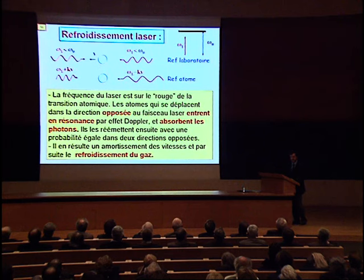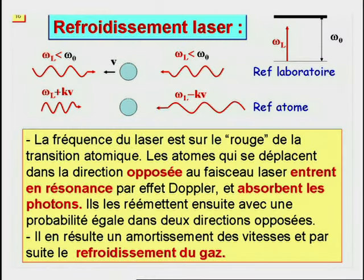Ils les réémettent ensuite avec une probabilité égale dans les deux directions. Il en résulte un amortissement de vitesse et par suite le refroidissement du gaz. Avec cette méthode, on arrive à réaliser des températures de l'ordre de quelques dizaines de microkelvins. Ce n'est pas encore assez pour voir apparaître la condensation de Bose-Einstein.